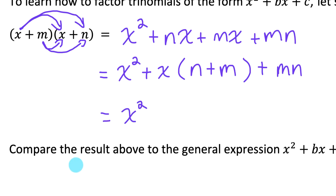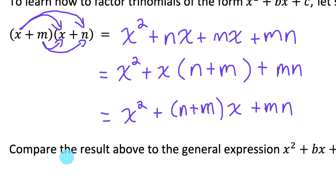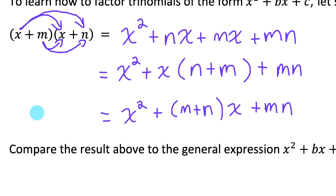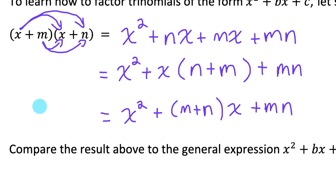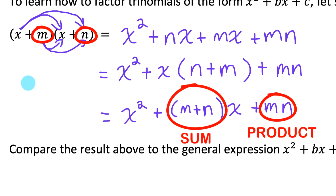Reordering slightly: the middle term is x times the quantity n plus m, and since order doesn't matter for addition, that's equivalent to m plus n. So we can compare the factored form to the standard form. The integers m and n, when multiplied, give us the constant c at the end, and when added together, give us b, the coefficient of the middle x term.